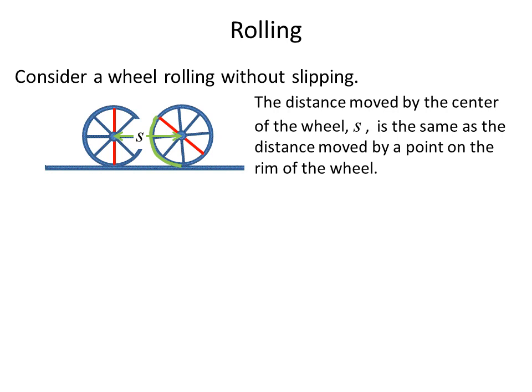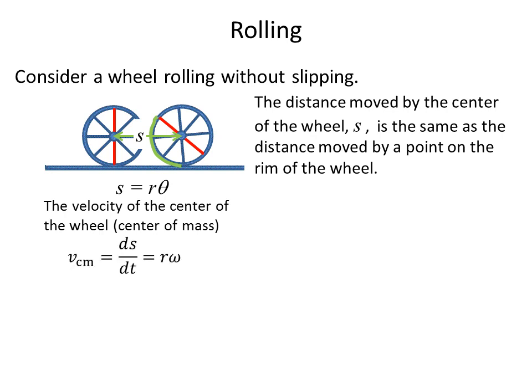The bottom point rotates up to the upper left as the wheel rolls. So s equals r times the angle theta through which the wheel is rotated. The velocity of the center of mass of the wheel is v_cm equals ds/dt, which equals r times the angular velocity omega.